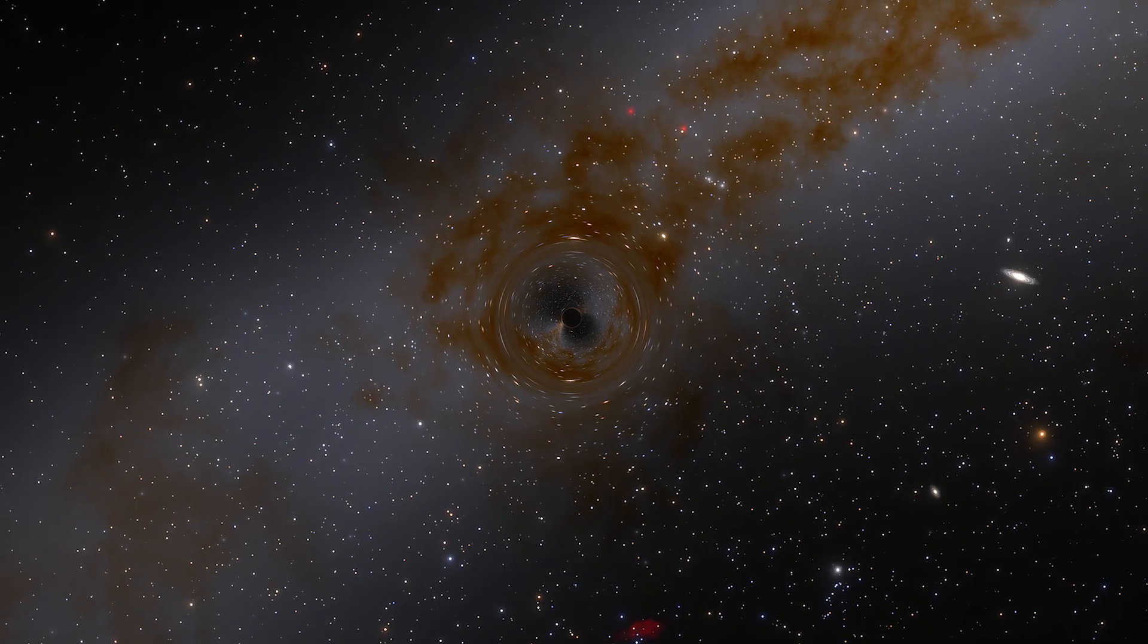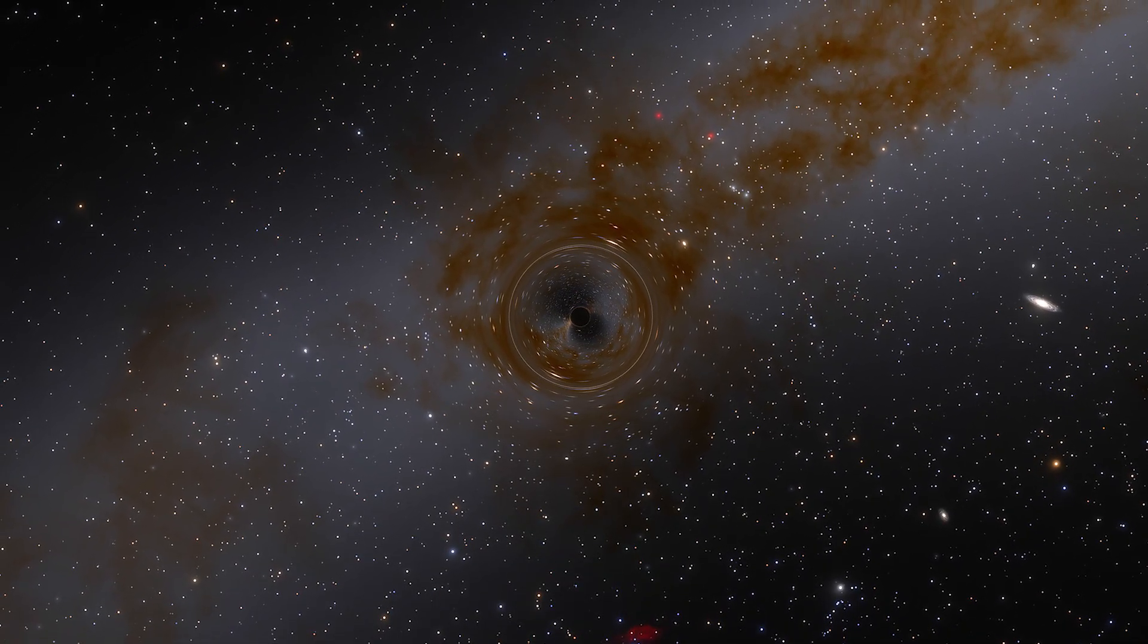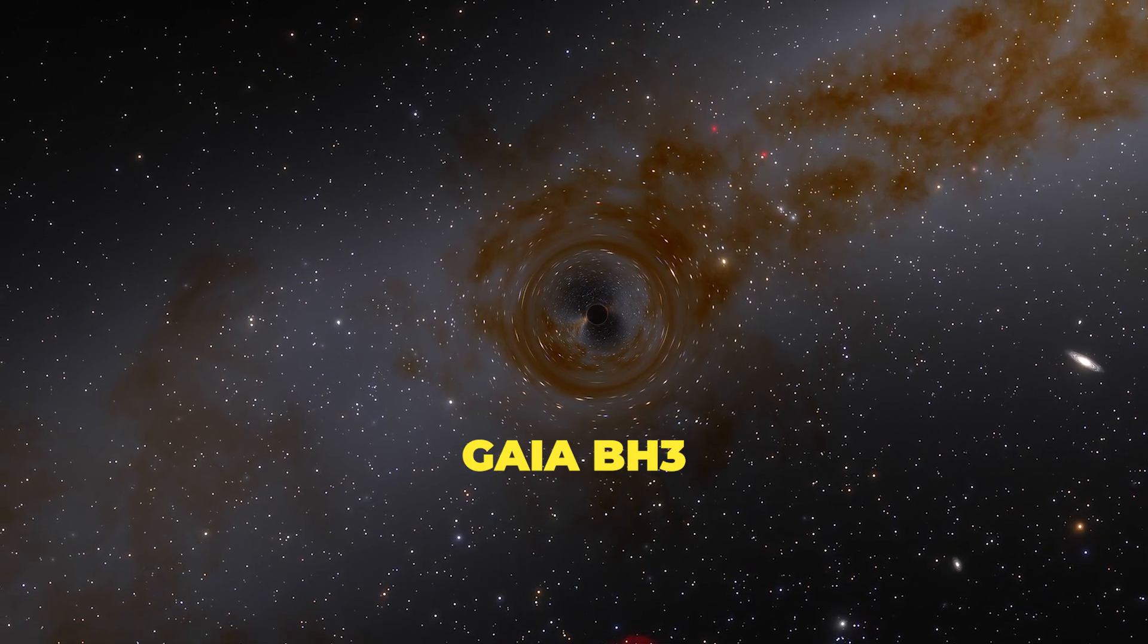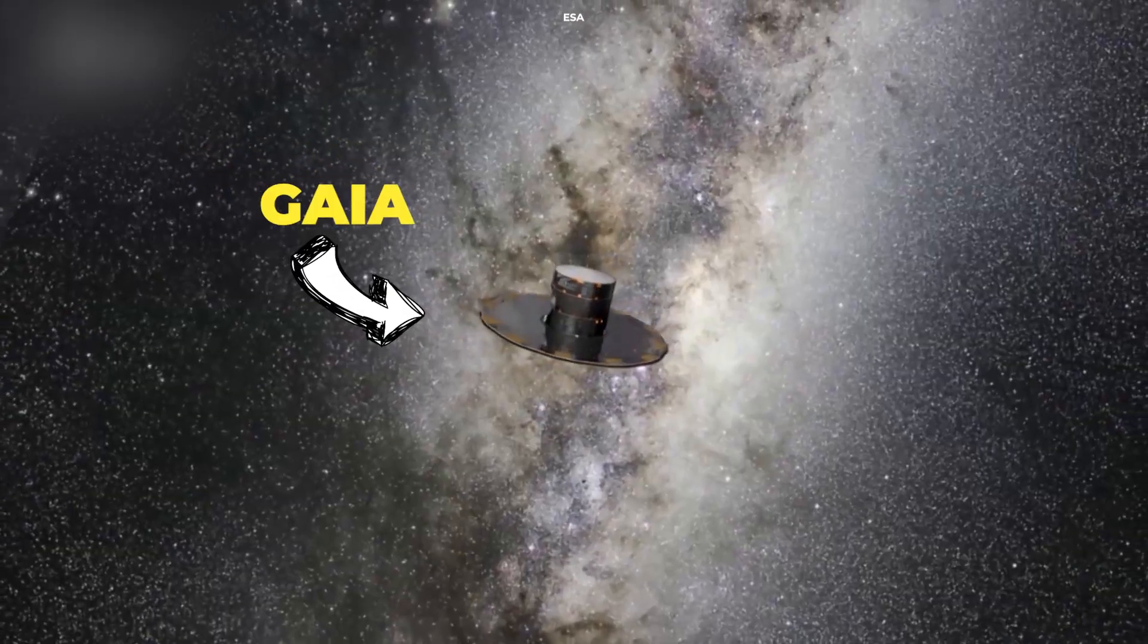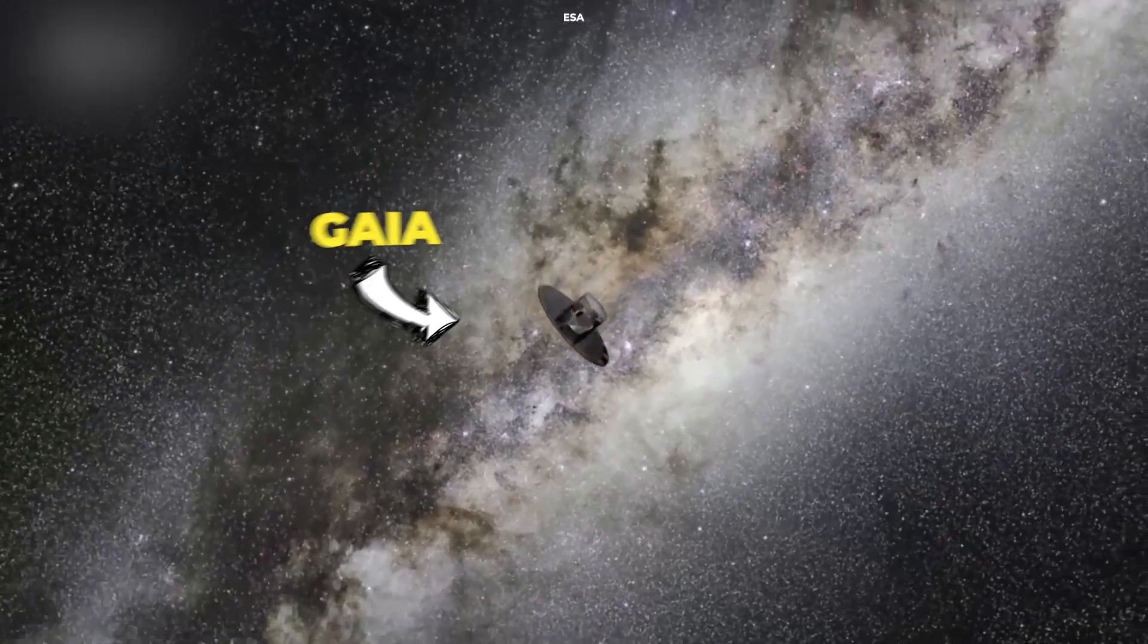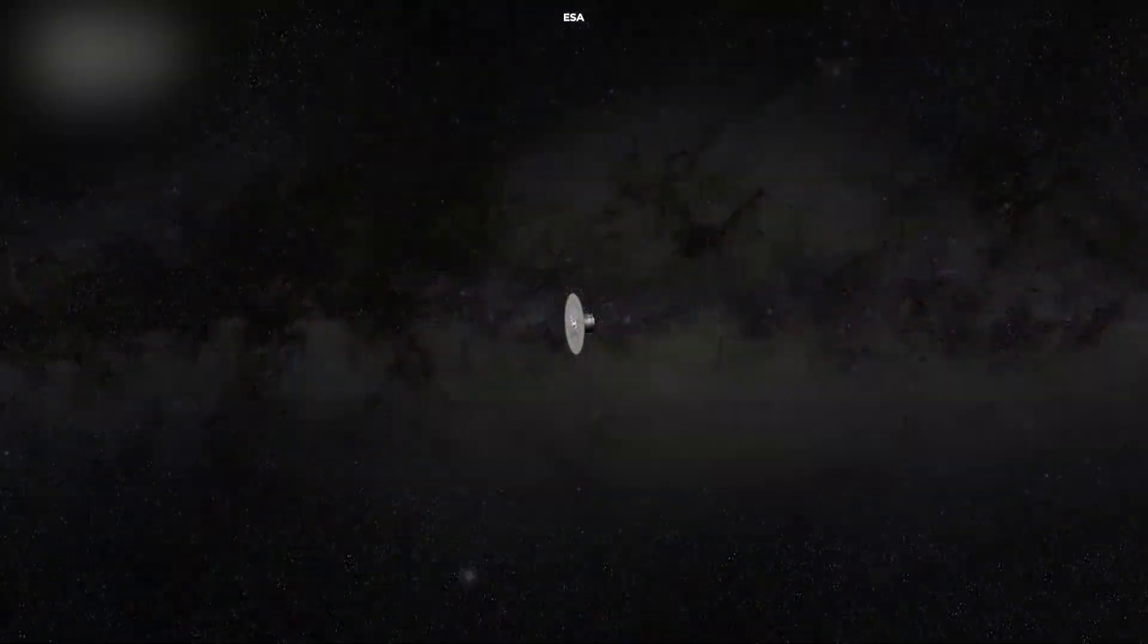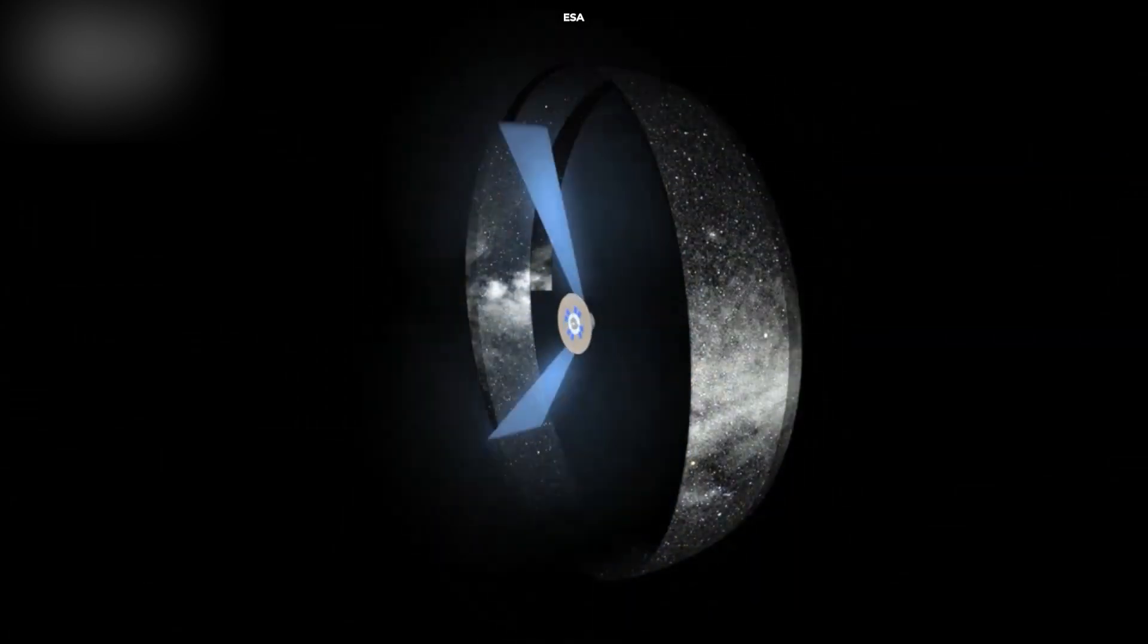The discovery we're discussing today involves a stellar black hole known as Gaia BH3. Astronomers found it using data from the European Space Agency's Gaia mission, a space observatory whose mission is to create the most accurate and comprehensive map of the stars in our galaxy.